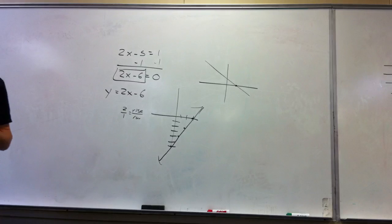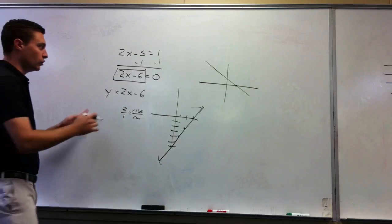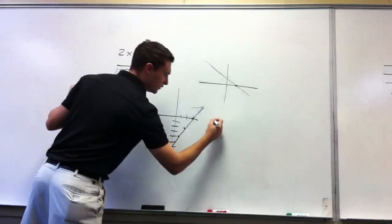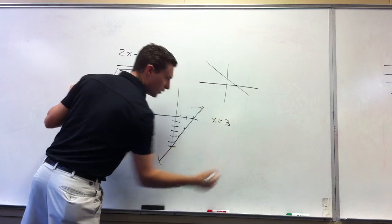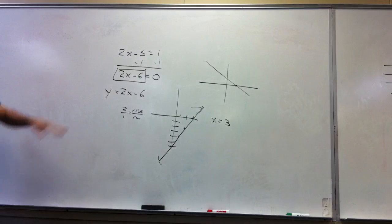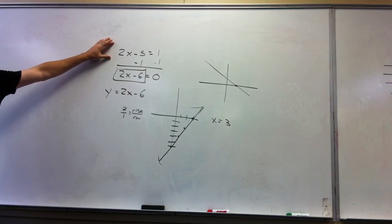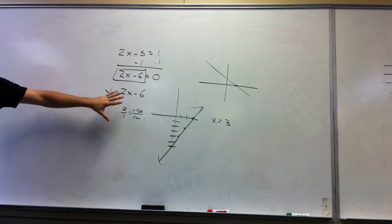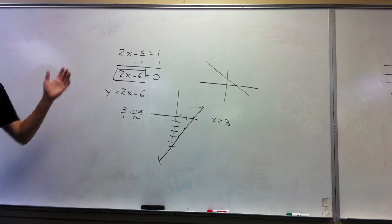Where does the line cross the x-axis? At 3. So the solution is x equals 3. How long did it take us to solve algebraically? Very fast. How long did this take? Very long. So why in the world are we doing this?